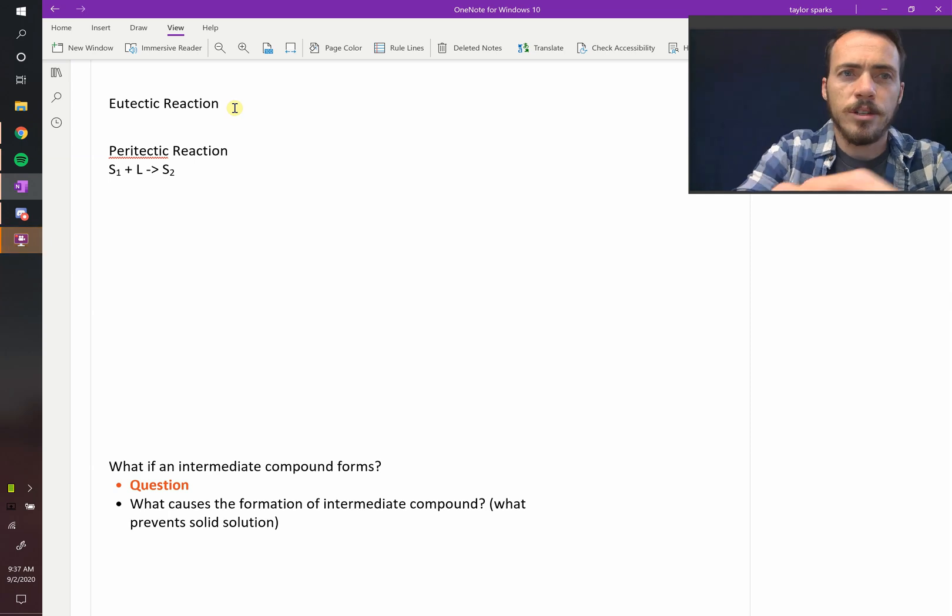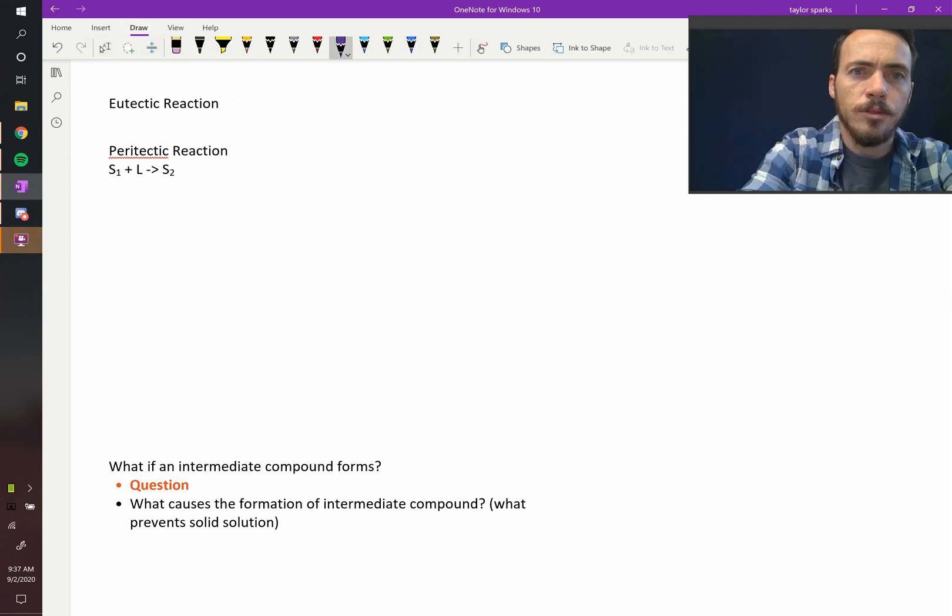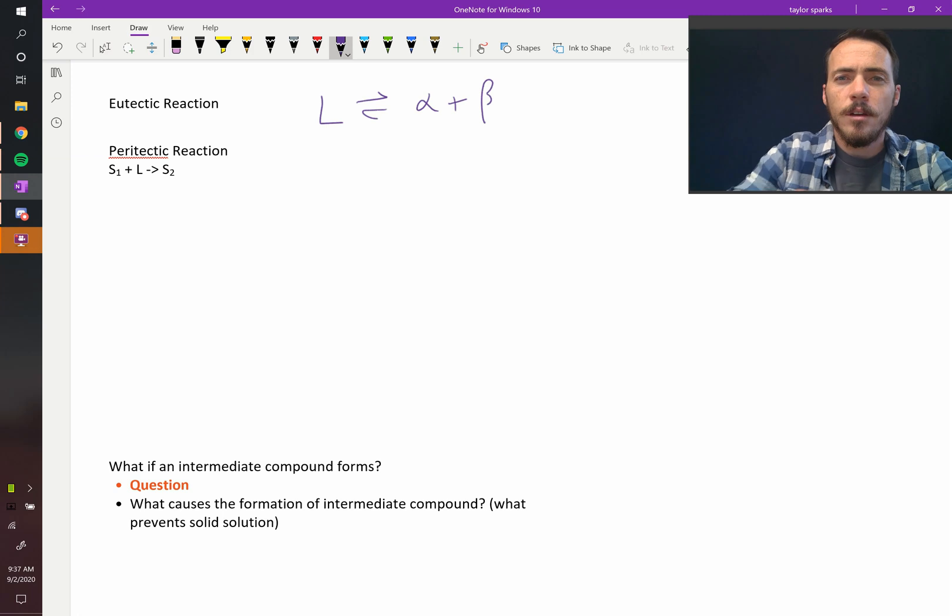We've just described the eutectic reaction, and just to remind you, the eutectic reaction is when you have a liquid, and upon cooling it down, you get the formation of two different solids. We'll call them alpha and beta. We always just use Greek letters for generic solid phases.